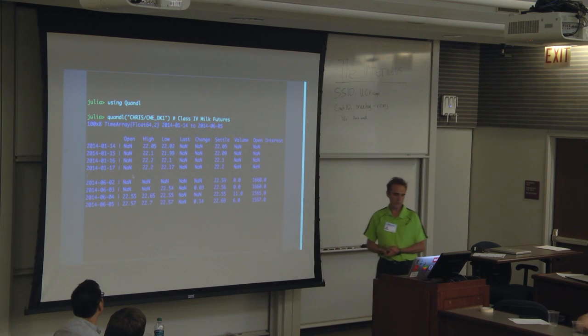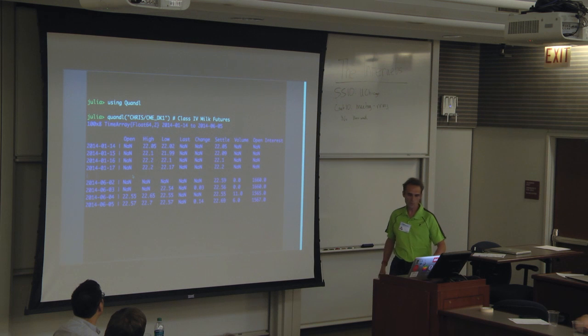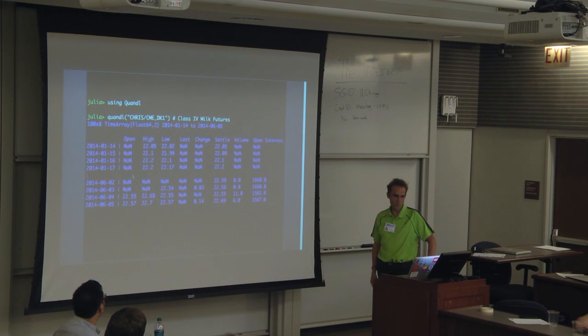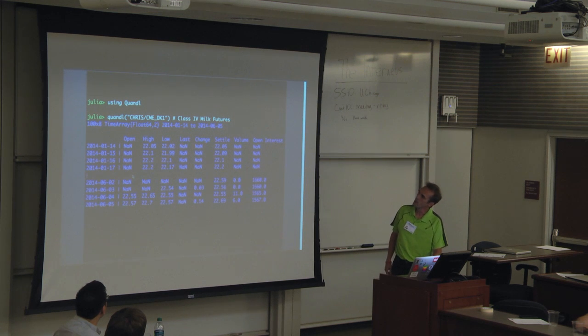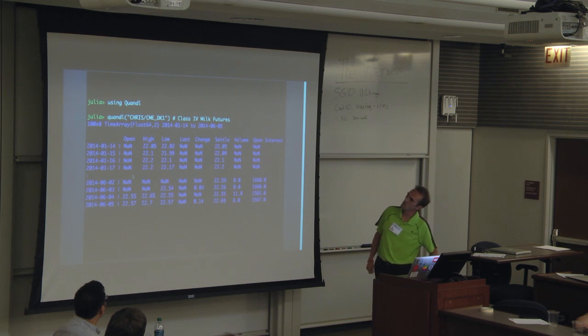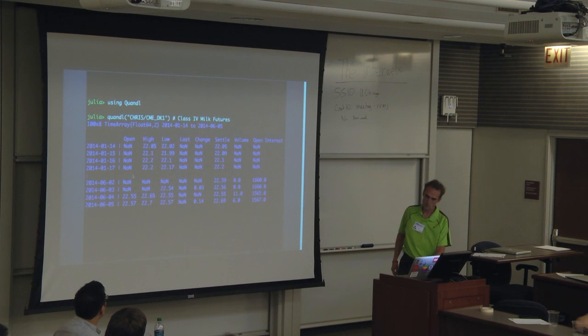So here's the Quandl package. You can use that as well. I got class A milk futures. And this has got a lot of missing data. So that's a good example. But if you were just to eliminate every row that had NaN or missingness, you wouldn't have any data at all. You can see the settle price. You might actually have something there that might be useful too.